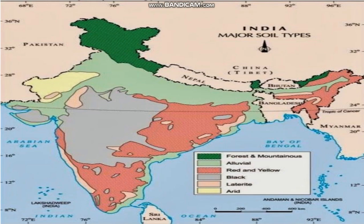Next is red soil. As you are looking at the map, the red color shown here is red soil. The color of this soil is red because of the presence of iron particles. Red soil is found in peninsular India and some parts of the northeastern region of India.